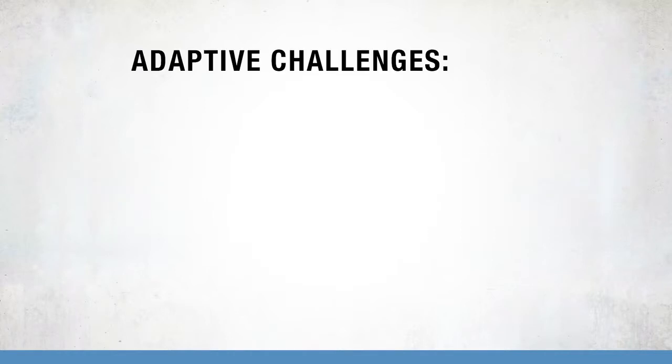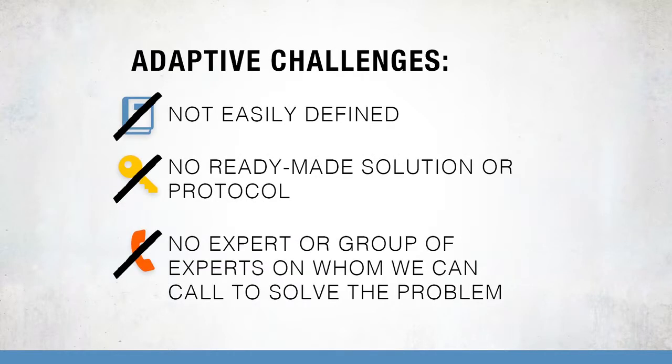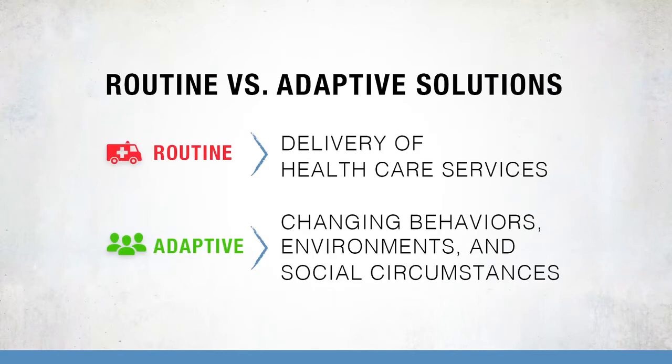On the other end of the continuum, there are what Ron Heifetz from the Kennedy School of Government refers to as adaptive challenges. These are an entirely different type of problem. Adaptive challenges are not well defined. While experts can weigh in on the issue, most likely they disagree on what the problem really is. So there is not a single easily identifiable expert or group of experts to call to solve the problem. There's not a checklist to follow or ready-made solution. When looking at determinants of health, only 10 percent of the causes of lost life can be attributed to the delivery of health care services, which are mostly routine solutions. However, working on behaviors, environments, and social circumstances — those are mostly adaptive.